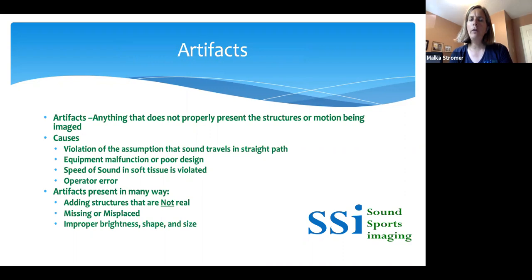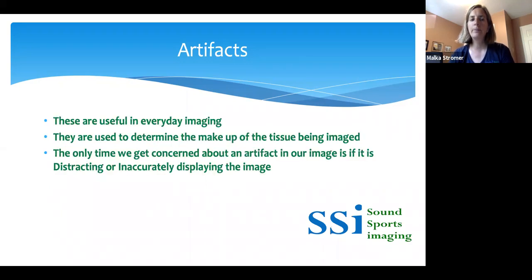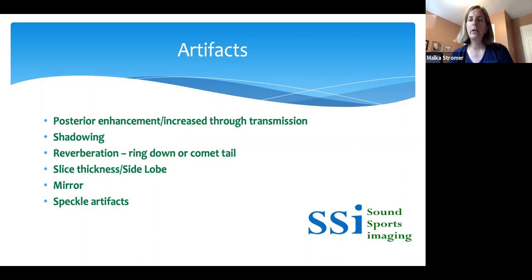Artifacts are incredibly valuable findings on ultrasound and help us distinguish soft tissue masses based on what we're visualizing. Artifacts are not real, but they provide us with information on the content and structure of the tissues we're looking at. They're useful in everyday imaging and used to determine the makeup of the tissue being imaged. We only get concerned about an artifact if it is distracting or inaccurately displacing the image. Here are some examples of artifacts that are helpful when trying to determine tissue makeup.